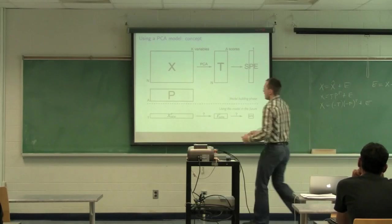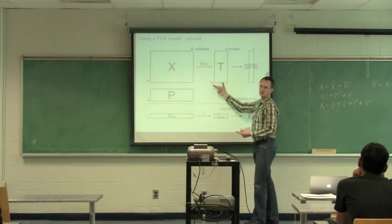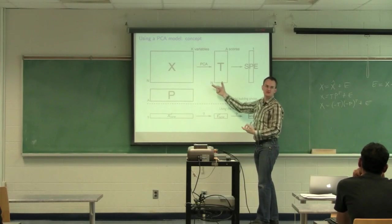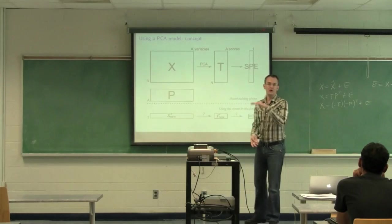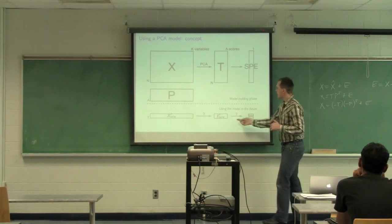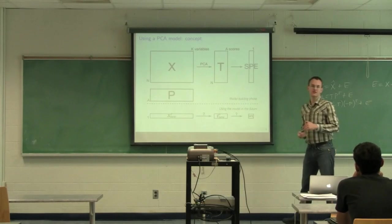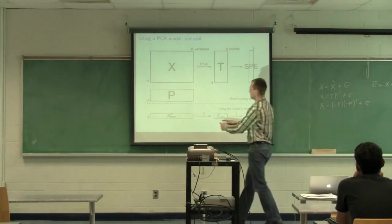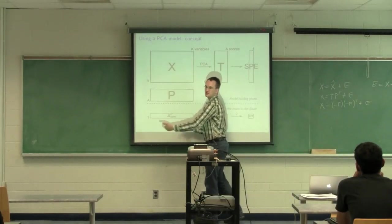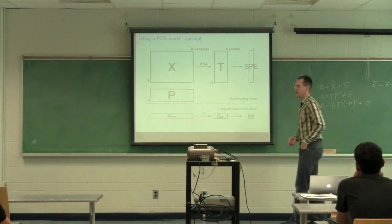We'd like to see where does x_new fall on the t1, t2, or t1, t3 score plots? Does x_new fall on the model plane or off the model plane? So how can we calculate the new score values as well as the new SPE value for that observation? We'll just do it for one observation because if we can do it for one row, we can just repeat this process for many rows. So I'll just look at one row for now.